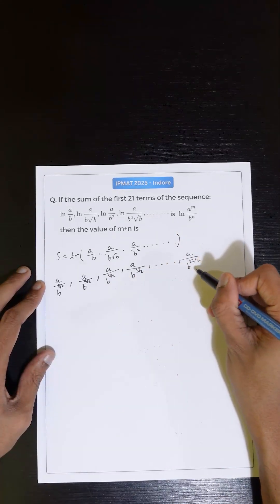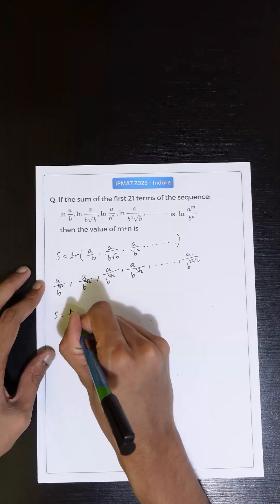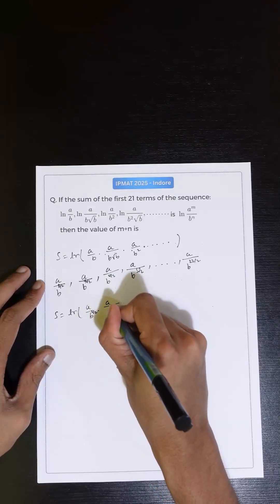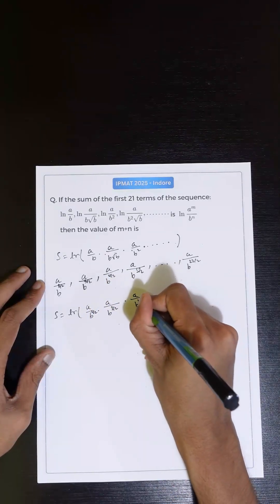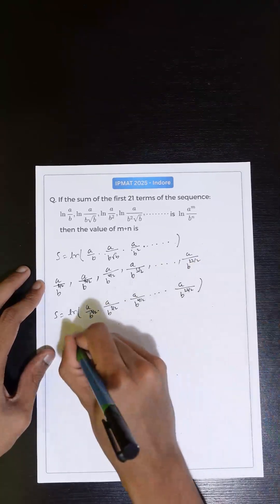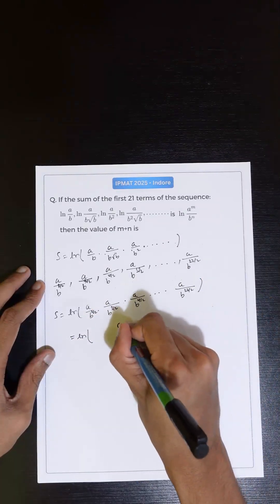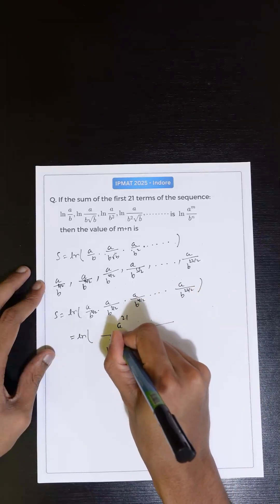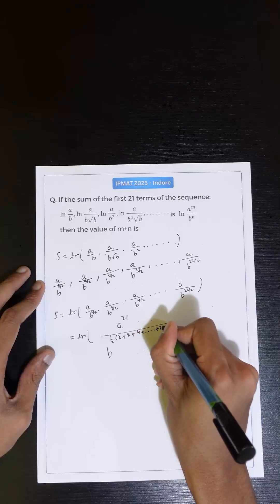For the 21st term, the power will be 22/2. So basically S can be written as ln of (a/b)^(2/2) times (a/b)^(3/2) times (a/b)^(4/2) and so on up to b to the power 22/2. The power of a will be 21 since a appears 21 times. For b, I can add all the powers: 2 + 3 + 4 and so on up to 22.